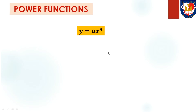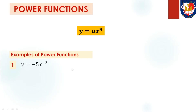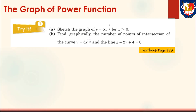Power Functions. The power functions are functions of the form y equals ax to the power of n, where a and n are real numbers. Here are some examples of power functions: y equals negative 5x to the power of negative 3, y equals 4x to the power of 0, y equals 5x to the power of negative 1 over 2, etc. Here is how to sketch the graph of a power function.